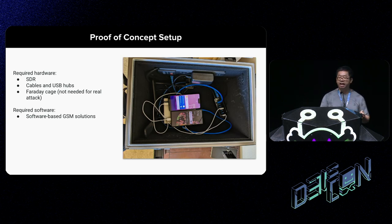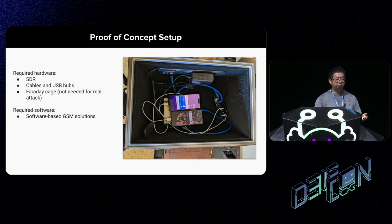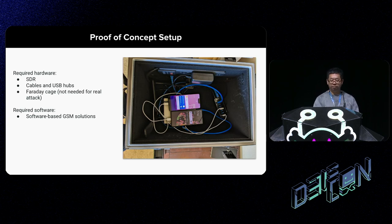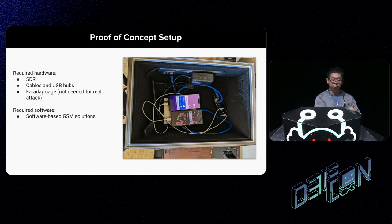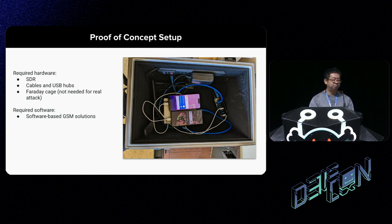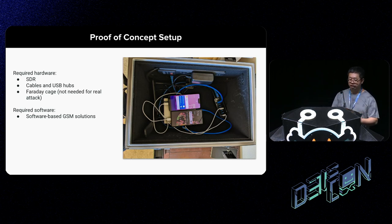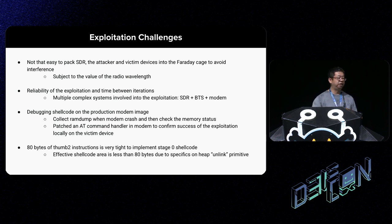Before this engagement, I always thought hacking a modem over the air was a very high-tech, complex task requiring very expensive devices. Our setup really surprised and scared me — it's pretty simple. The core part is a white box under the phones: the SDR device, in our case a USRP-B200. We have cables, and for legal compliance, a Faraday cage so we don't interfere with neighboring telecommunications. The software uses software-based GSM solutions like OpenBTS and Open5GS, which are either free or open source. The entire setup is less than a couple thousand dollars, and you can get even cheaper with less expensive SDR devices.